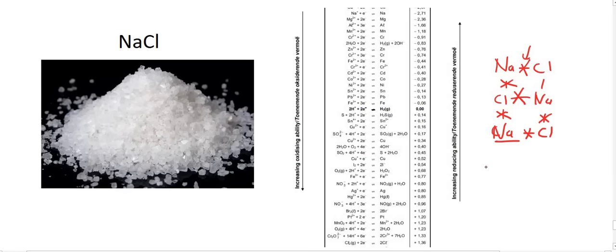Because when this breaks up, it's going to break up into a sodium ion and a chlorine ion. That is not pure sodium, and that is not pure chlorine. So let's go find these on the table. We've got Na+ up here, and we've got Cl- all the way down here at the bottom.